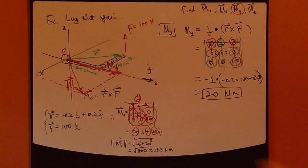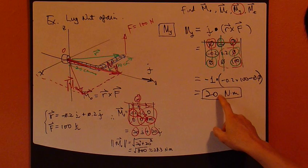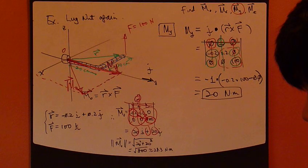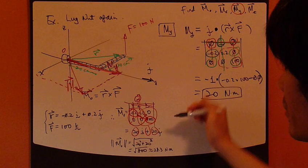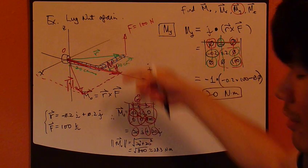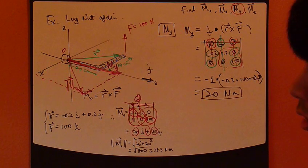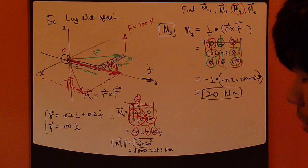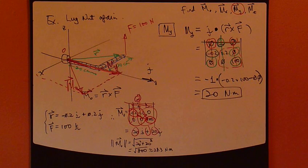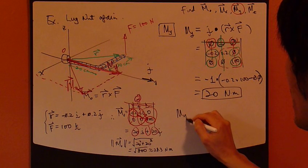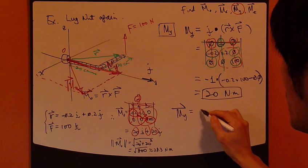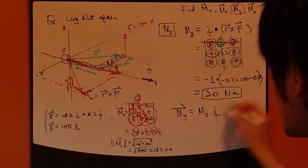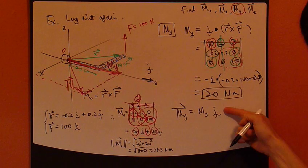Okay. So, we figured out the scalar, the magnitude of m_y. Okay? But, we want m_y's vector. Well, let's look at this. m_y is the moment about y-axis. So, m_y is pointing along the y-axis. Okay? So, therefore, m_y vector equals the m_y magnitude times the j vector.